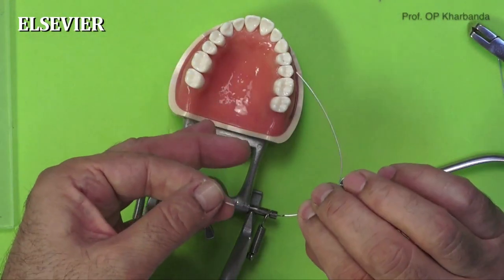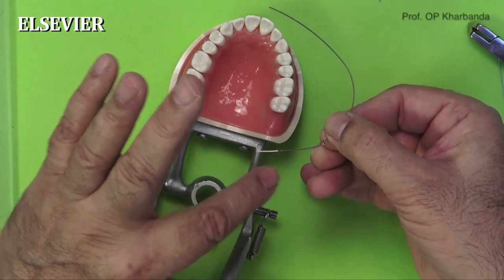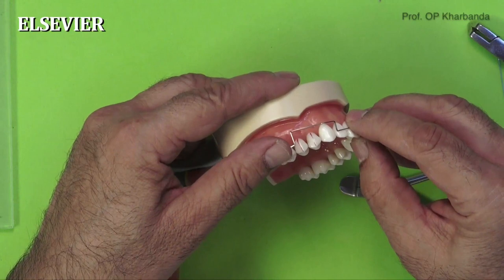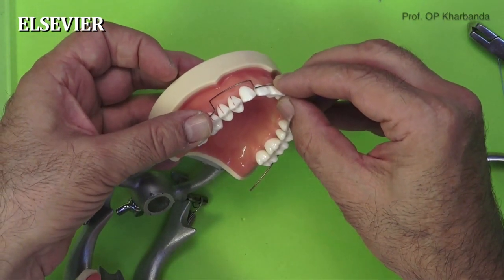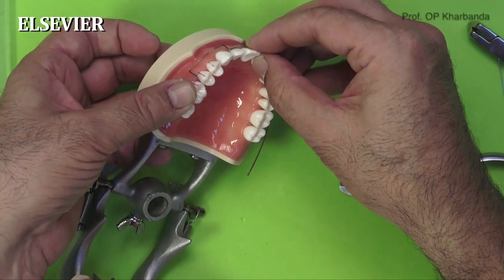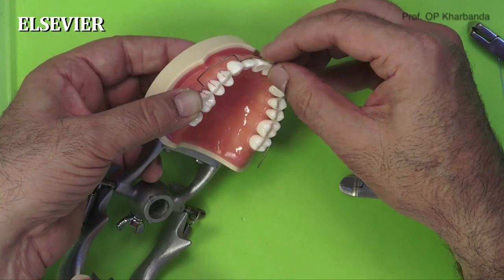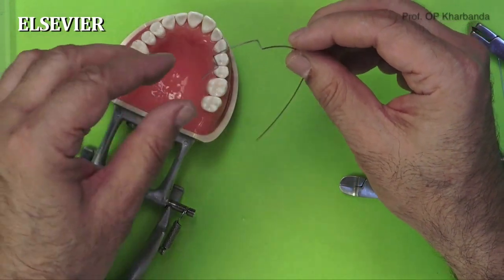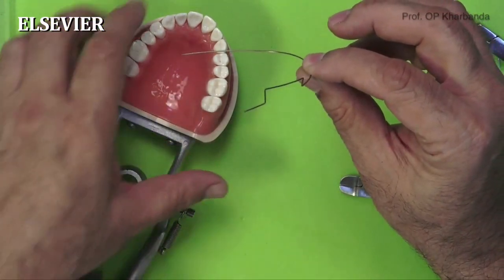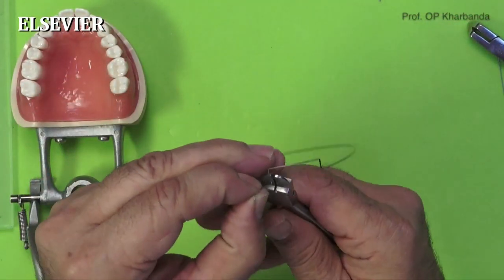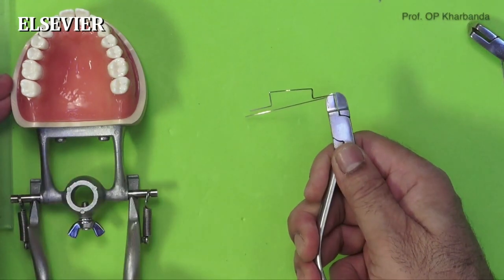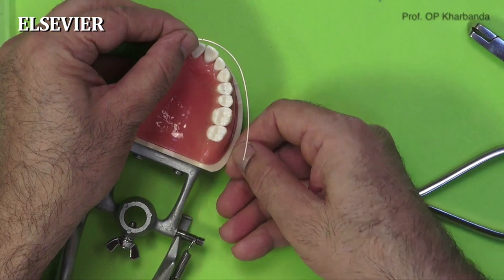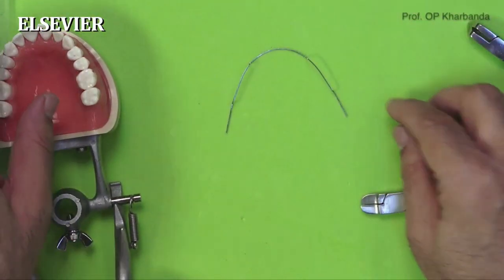At this stage, check for any torque in the buccal segment. In this case there is no torque and the buccal segment is quite flat. Make sure that you have enough freedom between the buccal vestibule and the buccal segment of the wire, and also ensure that you have no torque in the molar region. It is also important to check the plane of the wire — if the plane is not perfect, make a little adjustment. After completing one side, you can complete the other side of the wire. That is how you create a complete utility arch.